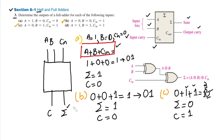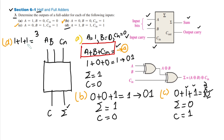Now let me solve part d. For part d, A equal to 1, B equal to 1, and C-in equal to 1 — all three inputs are 1. Substituting all values into the formula: 1 plus 1 plus 1 equals 3 in decimal. In binary, 3 is represented as 1 1. So the summation is 1 and the output carry is also equal to 1.